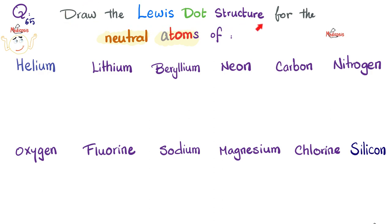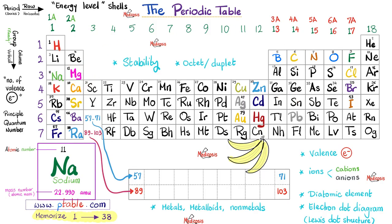Let's practice drawing Lewis dot structures for neutral atoms. Pause the video and try to answer yourself. You need your periodic table handy — go to ptable.com for the best free periodic table. To find the number of valence electrons, look at the group number. Sodium has one valence electron; magnesium has two; potassium one; calcium two; boron three. For groups 13 and above, look at the rightmost digit only. Carbon has four, nitrogen five, oxygen six, fluorine seven, neon eight.